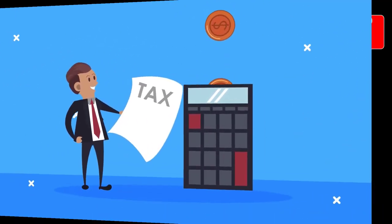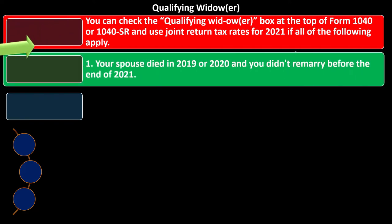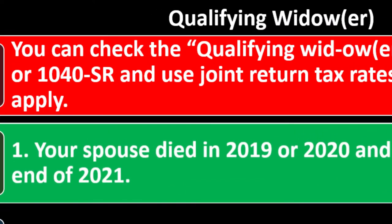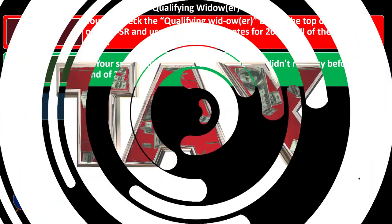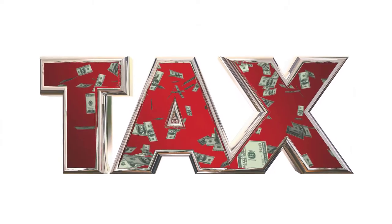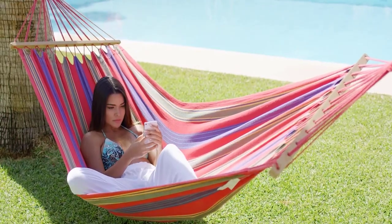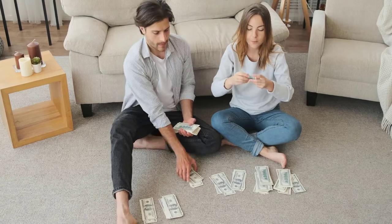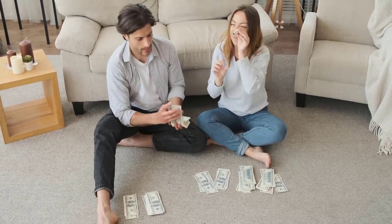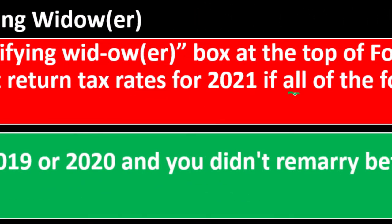You can check the qualified widow/widower box at the top of Form 1040 or 1040-SR and use joint return tax rates for 2021 if all the following apply — and remember, all of these have to apply. This is beneficial because you'll have the married tax rates, which are more favorable. When you went from single to married, you got two incomes and more beneficial tax rates, so if you're back to essentially one income stream, having the married rates is beneficial.